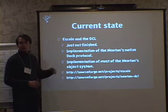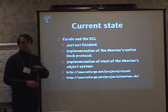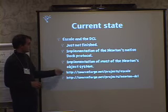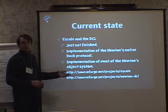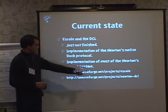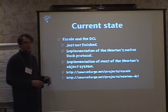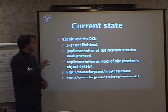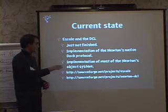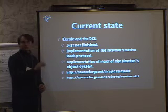Scale implements Newton's native dock protocol. There was some encryption system which was fixed, and it also implements most of the Newton object system — we got everything working except weak arrays, which is just a specific kind of array. I think it is one of the most complete Newton object system implementations outside the Newton itself; it's written in C++ and available on SourceForge with an MIT license.